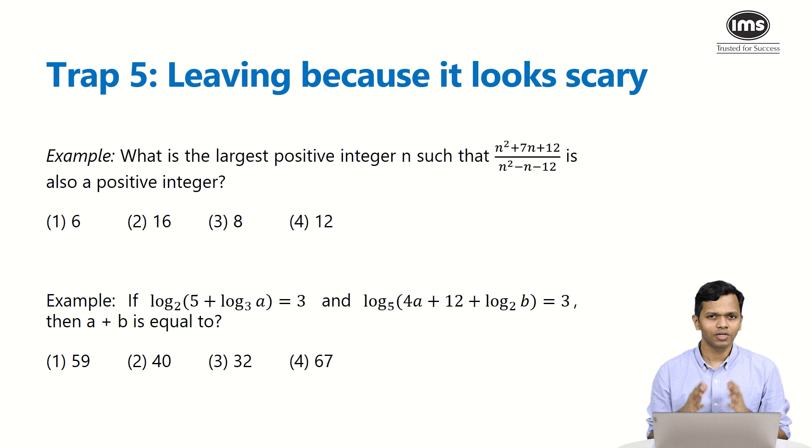And finally, let's talk about the last kind of trap, which is leaving because questions look difficult. A lot of times students see a particular question and because it may be from an area that they are typically not comfortable with, they tend to leave such questions. For example, let's talk about the first one: what is the largest positive integer n such that (4² + 7n + 12)/(n² - n - 12) is also a positive integer? Now you may not be very confident of quadratic or linear equations or algebra for that matter, but is it possible for you to simply substitute? For example, can you put n equal to 6? Can you put n equal to 8, 12, 16 and just cross check if you are getting a positive integer or not?